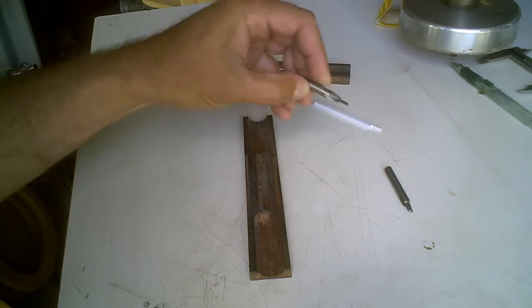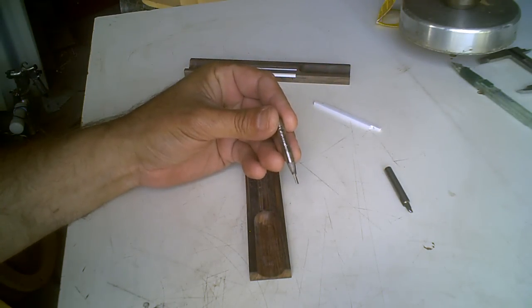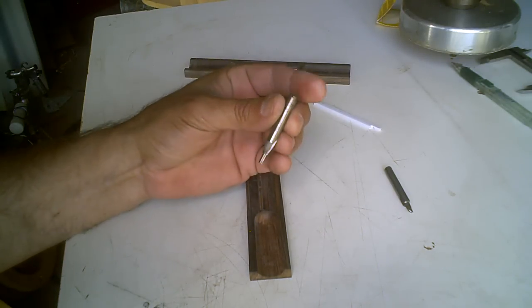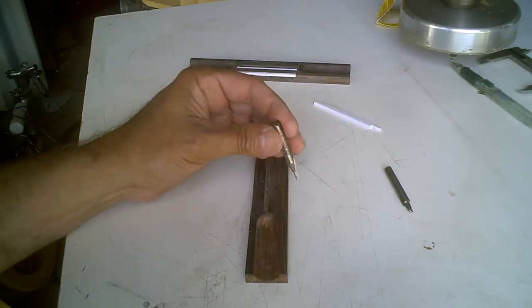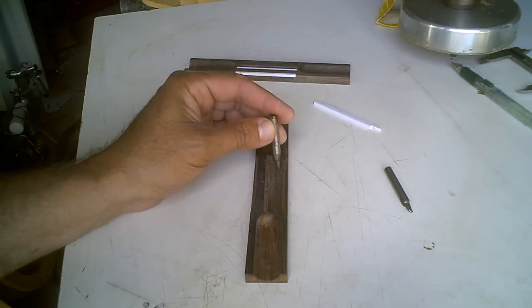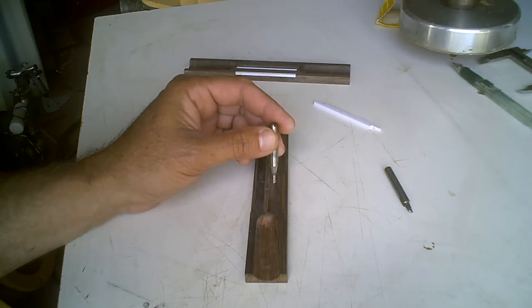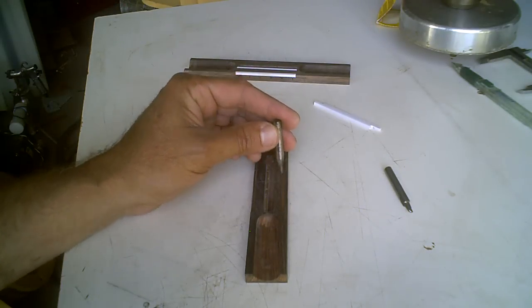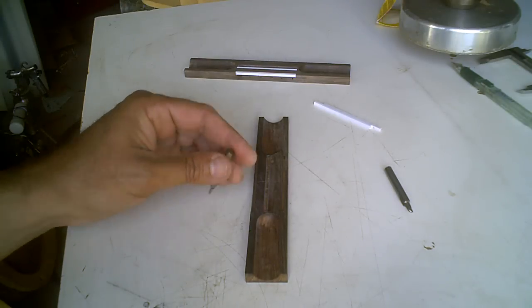I start out first with the, this is an Amana tool bit, part number 45192. It's a 3/32nds bit, and that's put in the drill press, and I drill the slot for the saddle. The length of this is, let me see here, the length is 2.625. I think that's like two and five eighths length. In fact, all of these are 2.625 in length.